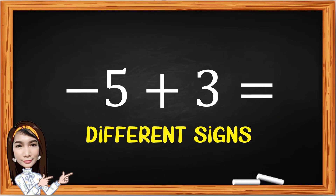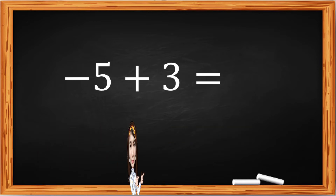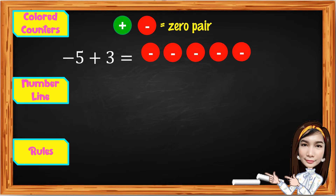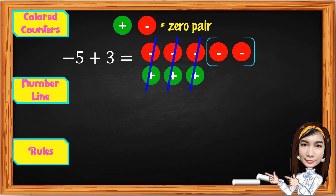Now let's look at different signs, or unlike signs. We have negative 5 plus positive 3. Here we have both positive and negative integers, so we can cancel zero pairs. For negative 5, use 5 red counters. For positive 3, use 3 green counters. We have 3 sets of zero pairs to cancel. Count the remaining 2 red counters. The result is negative 2.